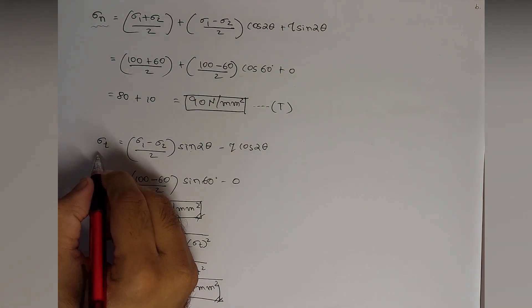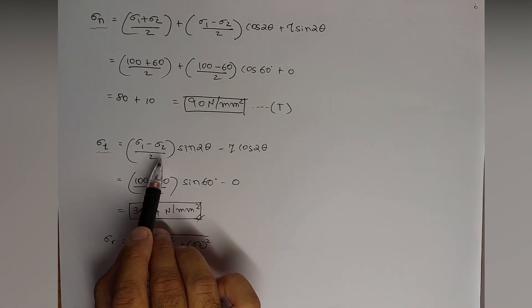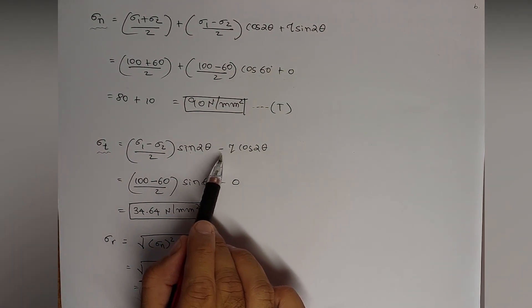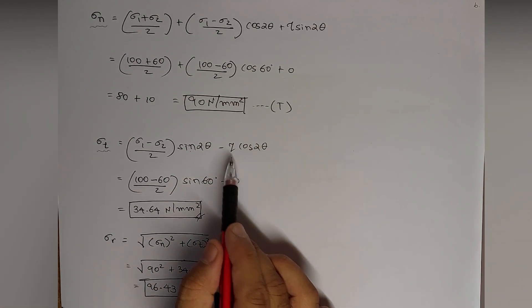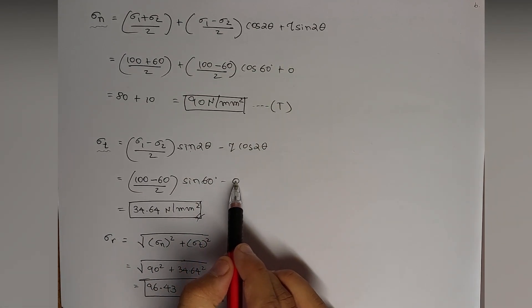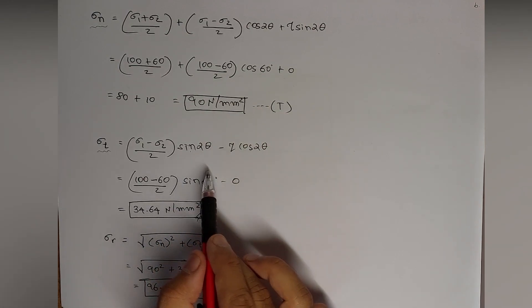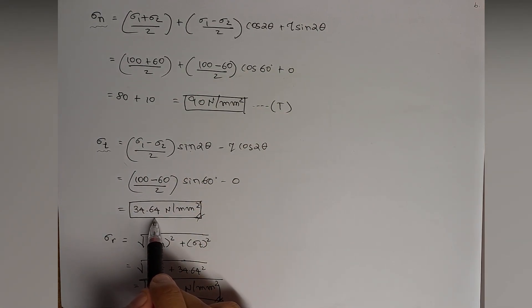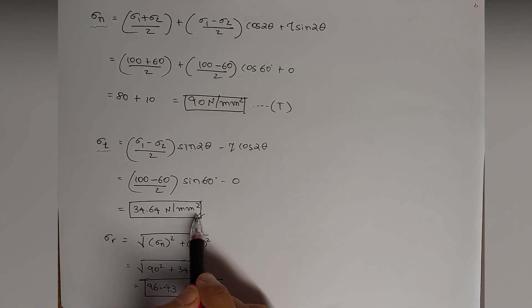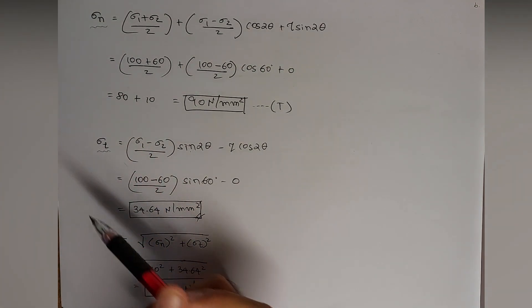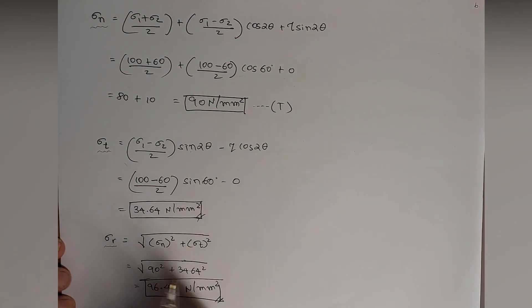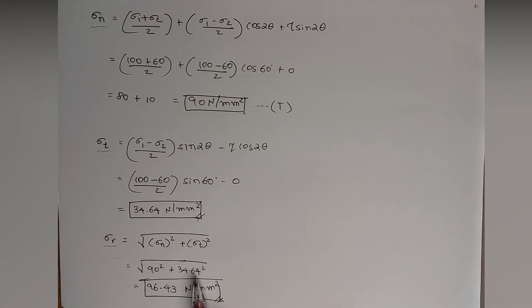For tangential stress, the equation is: (σ₁ − σ₂)/2 · sin 2θ − τ · cos 2θ. Since τ = 0, the second term is zero. With θ = 30° (sin 60°), solving gives σt = 34.64 N/mm². For resultant stress, we use √(σₙ² + σt²) = √(90² + 34.64²) = 96.43 N/mm².